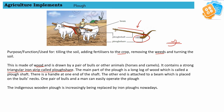The main part of the plow is a long log of wood called the plow shaft. As you can see in the figure, this long log of wood is known as the plow shaft. There is a handle at one end of the shaft. The other end is attached to a bim which is placed on the bull's neck, and that end is held by the farmer.